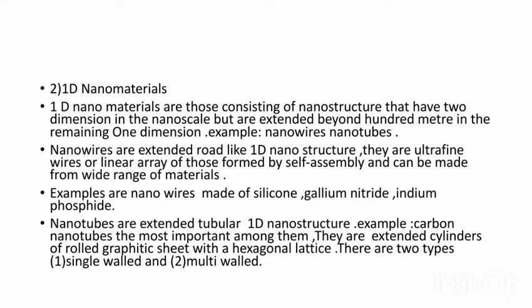Another example of 1D nanomaterials is nanotubes. Nanotubes are tubular 1D nanostructures. Carbon nanotubes are extended cylinders of rolled graphitic sheets with a hexagonal lattice. There are two types of carbon nanotubes: single-wall, consisting of a single cylinder, and multi-wall, consisting of concentric or nested cylinders.